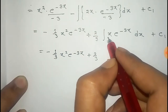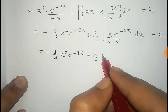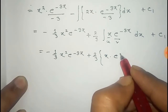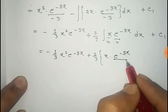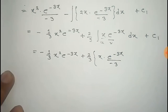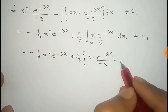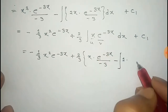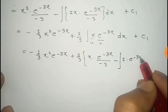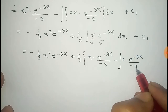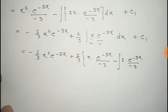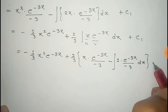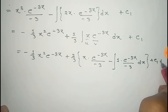Now, the integral of x e to the power minus 3x is solved again using integration by parts. The first term is x into the integral of e to the power minus 3x, which is e to the power minus 3x by minus 3, minus the total integral of the derivative of x, which is 1, times minus e to the power minus 3x by minus 3, into dx, plus constants c1 and c2.